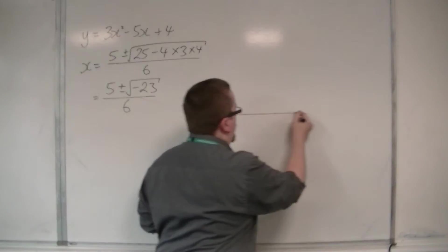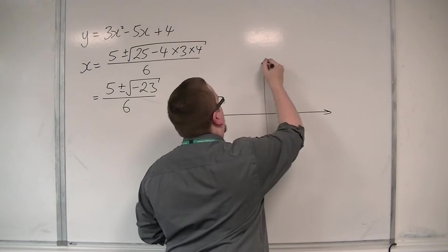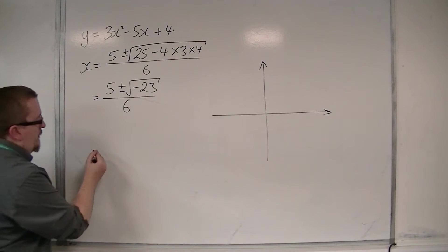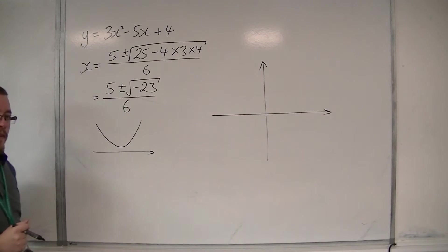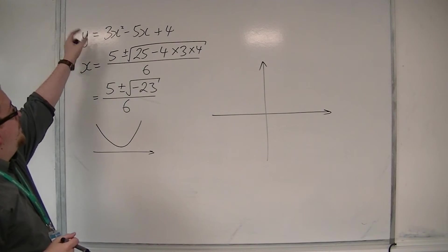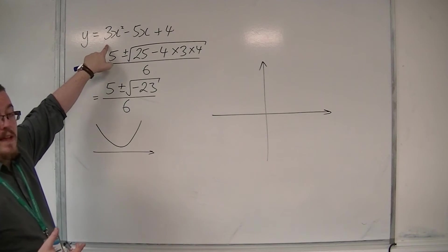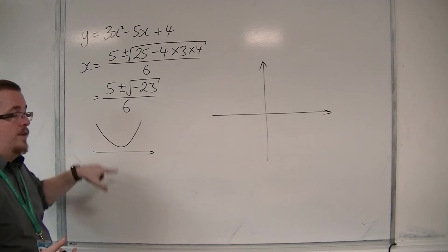We can be led to assume that the curve must be totally above the x-axis, because the number in front of the x squared is positive, so I know that the curve has that shape.